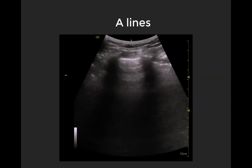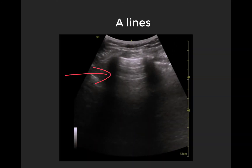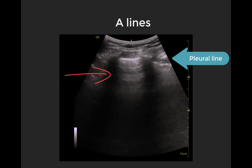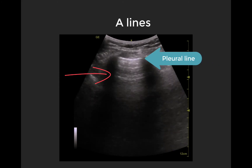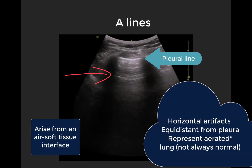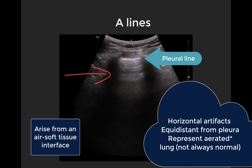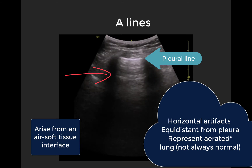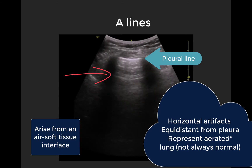A-lines are horizontal reverberation artifacts emanating from the pleural line that represent an aerated lung. That can be normal lung, but we can also see A-lines in things like COPD, asthma, or pulmonary embolism, where there is no interstitial or alveolar pathology.